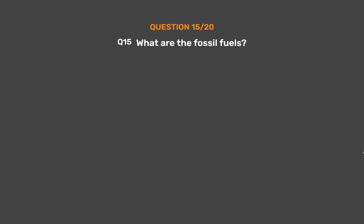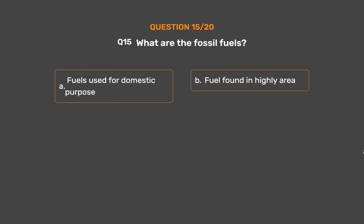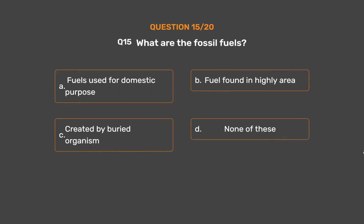Question 15: What are fossil fuels? Option A: Fuels used for domestic purposes. Option B: Fuel found in hilly areas. Option C: Created by buried organisms. Option D: None of these.